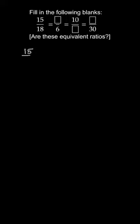The question says fill in the blank where we have 15 by 18 equals some blank in the numerator divided by 6. We'll look for the first one right now. What should we multiply with 6 to get 18? We need to multiply 3. So whatever the number here would be, it gets multiplied with 3 to get 15. If we need the numerator, multiply by 5 — so 5 by 6 gives us 15 by 18.